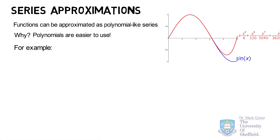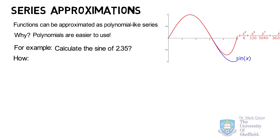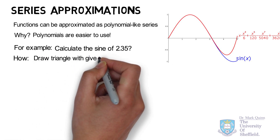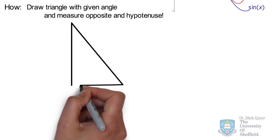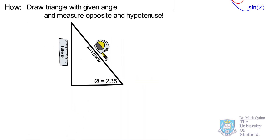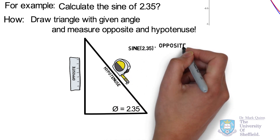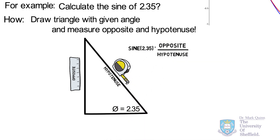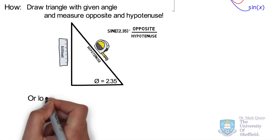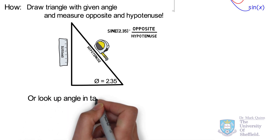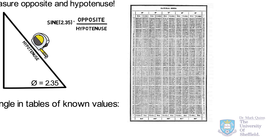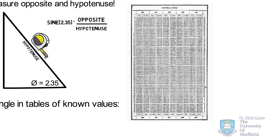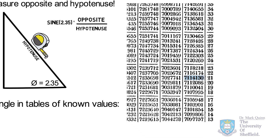For example, calculate the sine of 2.35 radians. How would we do this? We could draw a triangle with the given angle and then measure the length of the opposite and hypotenuse sides. The sine of the angle of interest would just be the ratio of these two sides. Another traditional method would be to look up the angle in tables of known values, giving us values to some approximate precision. Neither of these approaches are ultimately ideal for calculations.